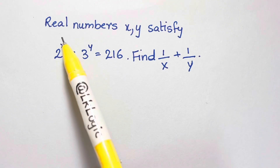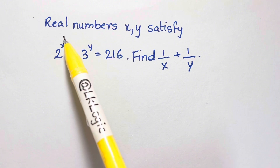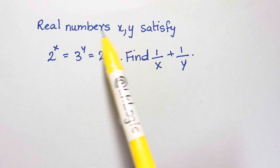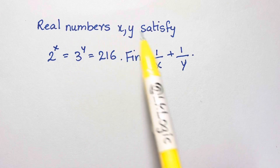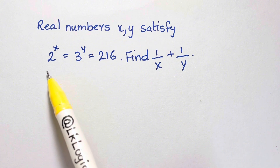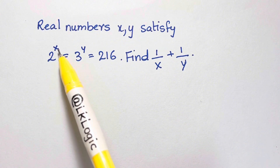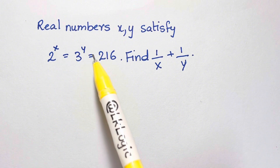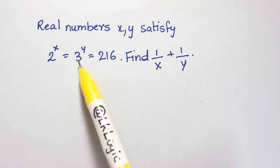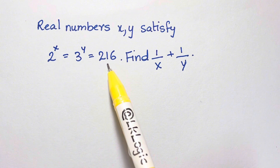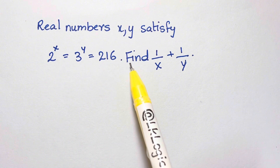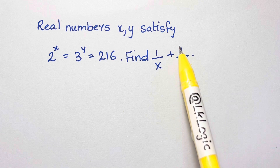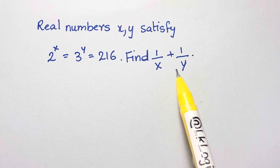Hi guys, let's take a look at this problem. It says x and y are real numbers such that 2 to the x equals 3 to the y equals 216. Both are equal to the same thing. So we have to find 1 over x plus 1 over y.